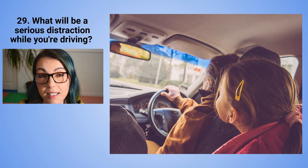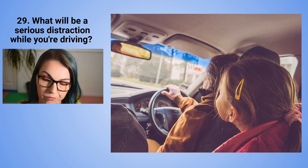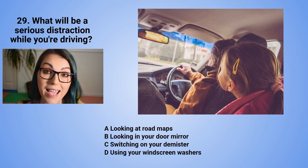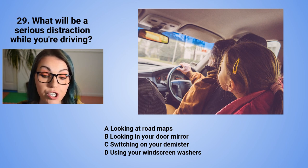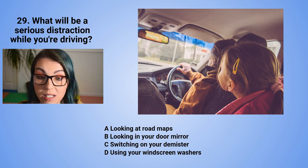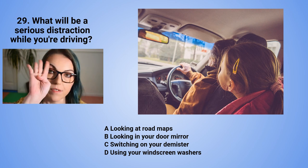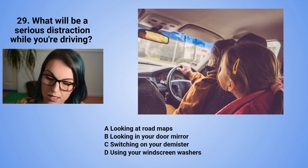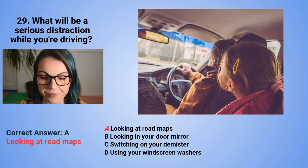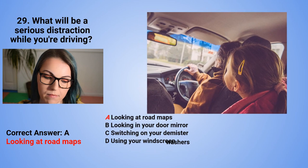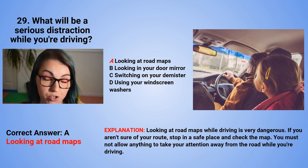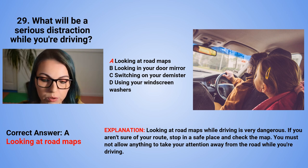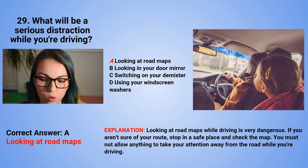Question 29: What will be a serious distraction while you are driving? A. Looking at road maps. B. Looking in your door mirror. C. Switching on your demister. Or D. Using your windscreen washers. The correct answer is A — looking at road maps. Looking at road maps while driving is very dangerous. If you are not sure about your route, stop in a safe place and check the map. You must not allow anything to take your attention away from the road while driving.